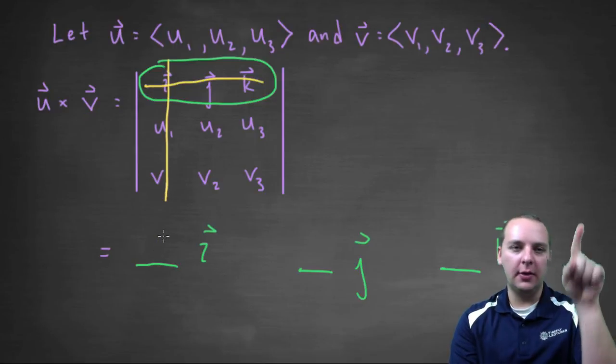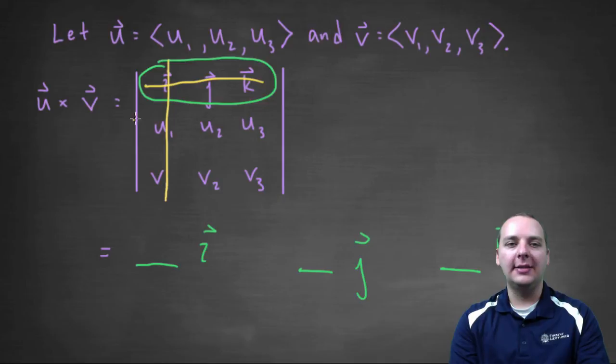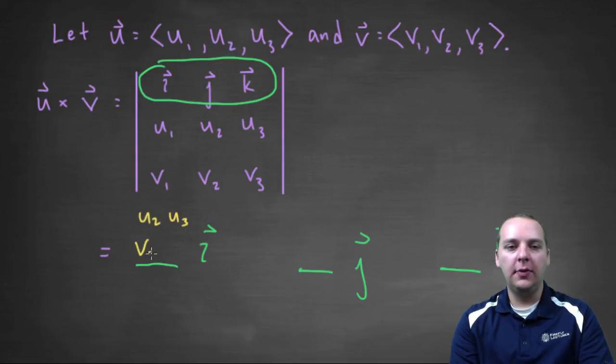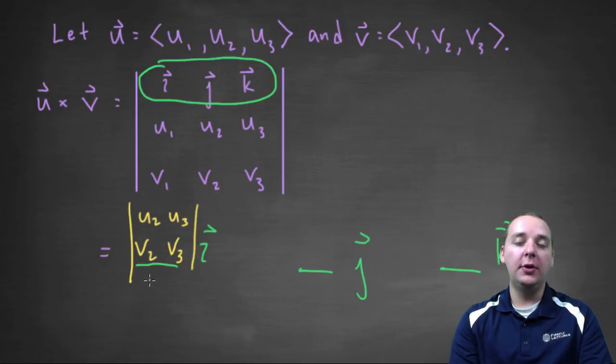So just mentally mark the row and the column out that has i in it. And you see I have four terms left over. We're going to make a little mini determinant of u2, u3, v2, v3 out of these guys. Now two by two determinants you definitely should be familiar with, because that's something we do a lot.